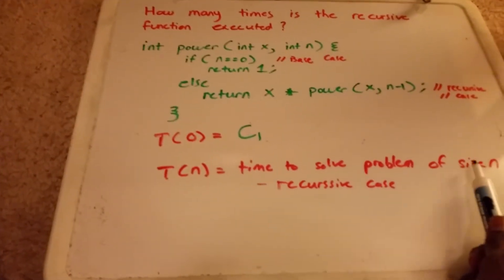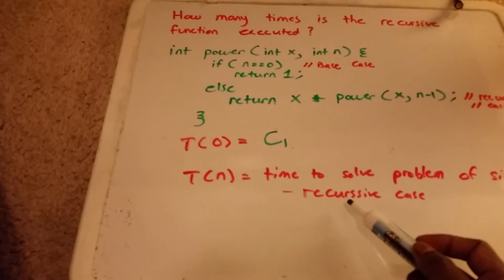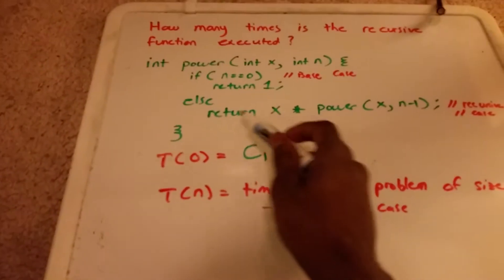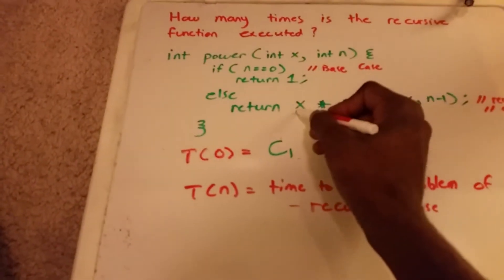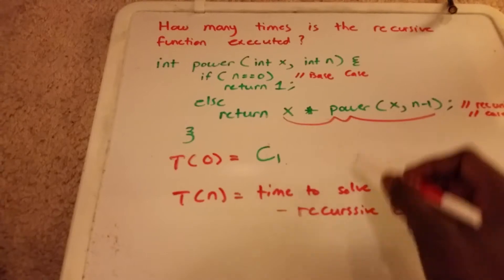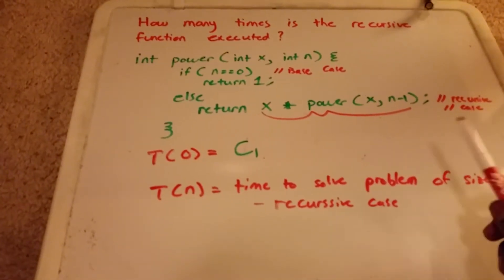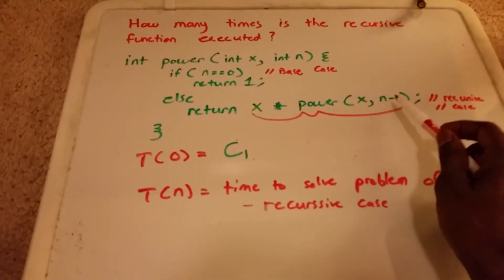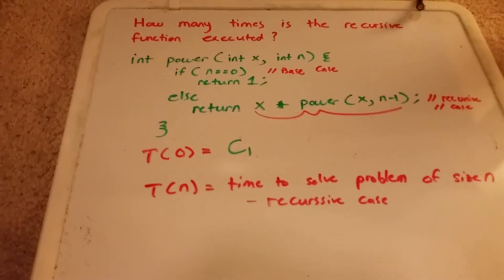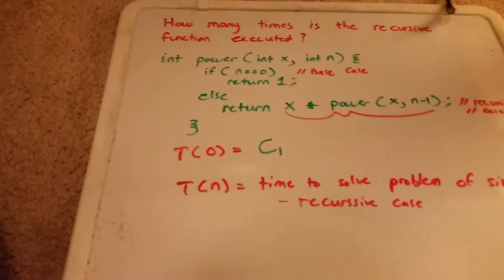Time to solve a problem of size n is T(n). So this is our recursive case, which is here. And I'll highlight that. And it takes n minus 1 times to solve that problem.